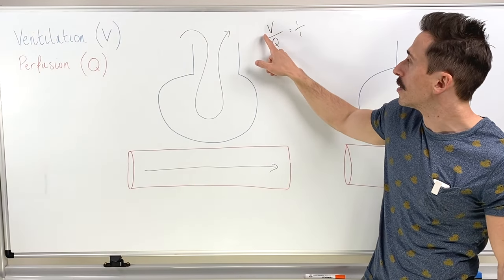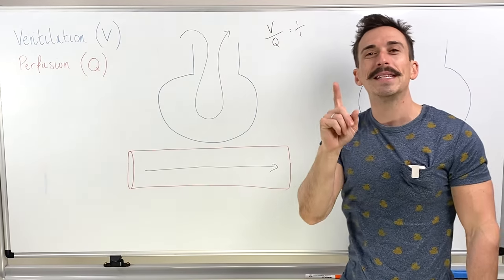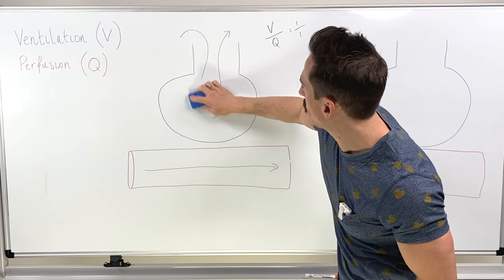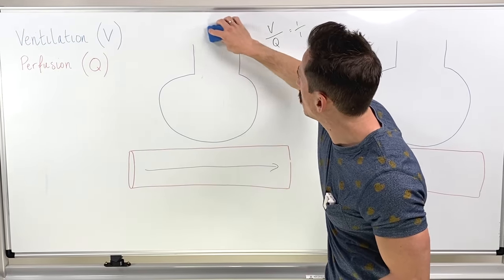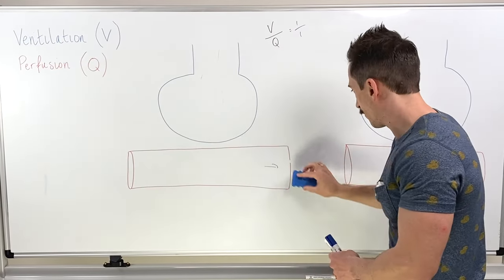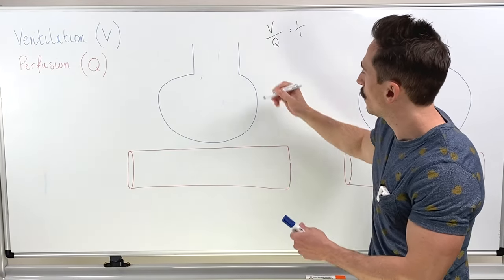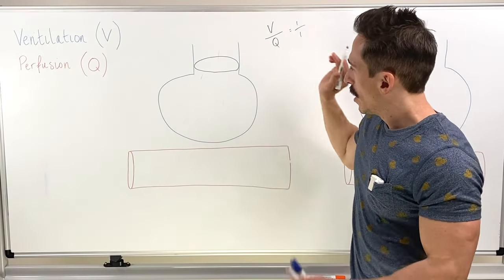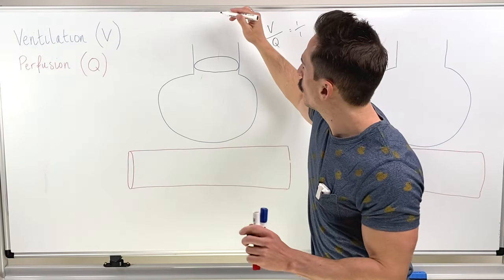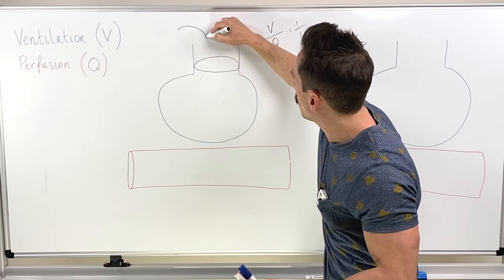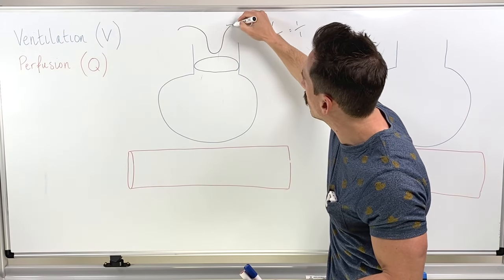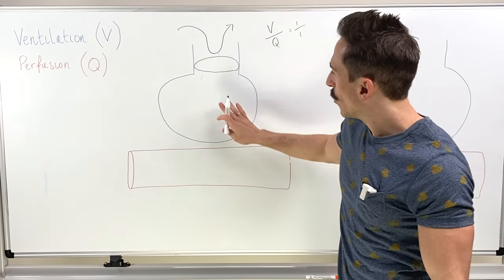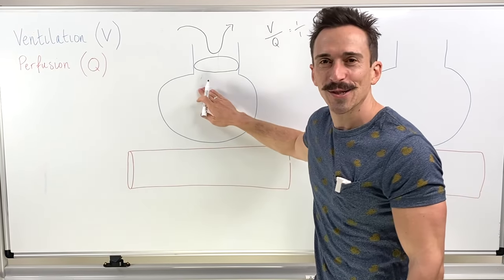Let me demonstrate clinically how this works. Let's say we've got some sort of blockage in the alveolus. There's a blockage in the alveolus — think about this. You've got the ventilation, the air coming in and out of the alveolus; it's not happening because there's no ventilation occurring. So what happens to the gas that's inside of this alveolus?